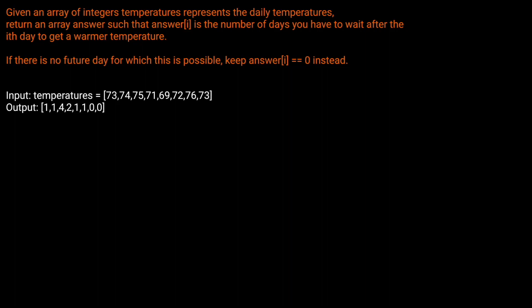Hello and welcome back to the Cracking Fang YouTube channel. Today we're going to be solving LeetCode problem 739, Daily Temperatures. Given an array of integers, temperatures, which represents the daily temperatures, return an array answer such that answer of i is the number of days you have to wait after the i-th day to get a warmer temperature. If there is no future day for which this is possible, keep answer of i equal to zero instead.